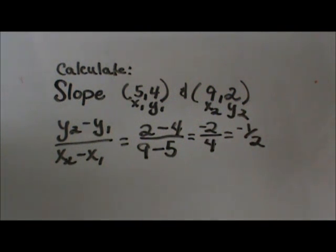So that is how I would calculate the slope of the line containing points (5, 4) and (9, 2).